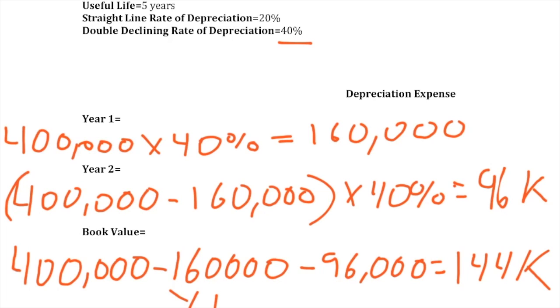Done. So the key here is always remember to ignore the salvage value when calculating the rate. Remember it is always easier to calculate the straight line rate of depreciation first, and then multiply it by 2 to double the rate, and then apply it to your base.